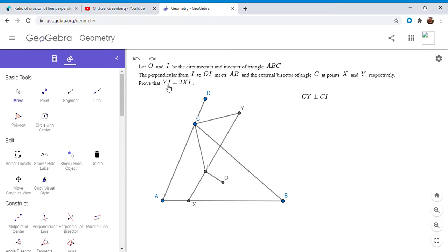And we want to show that YI is equal to 2XI. So it makes sense, I'm going to denote a point E to be the midpoint of YI. So then we want to show that EI is equal to XI.